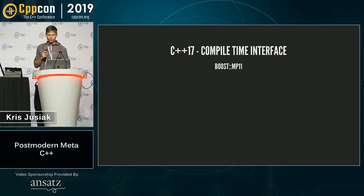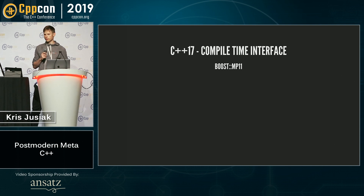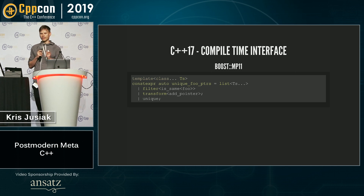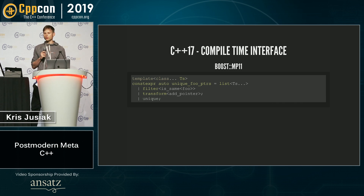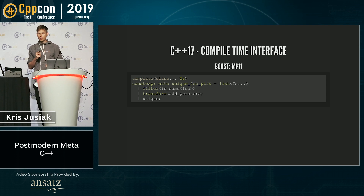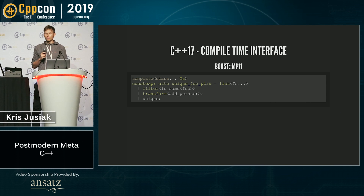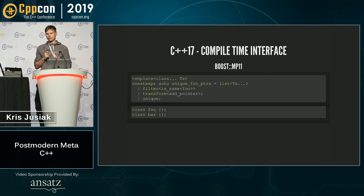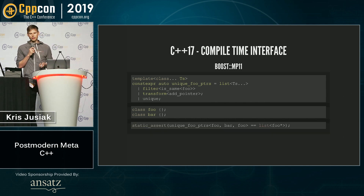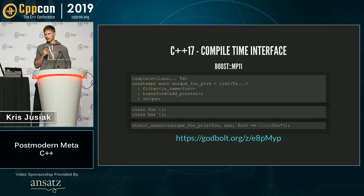We say foo, and after that we transform it. If you want to have unique foo pointers, we have a list — a variable template — pipe it with a range-style interface, transform and unique. So fewer angle brackets, much nicer. We can easily static assert this with operator equal, and you can find a link on Godbolt.